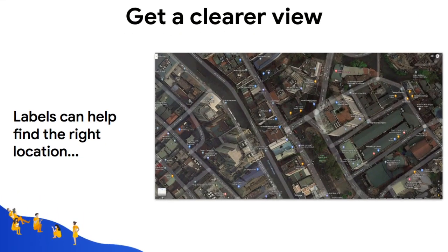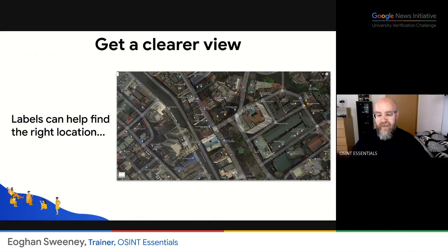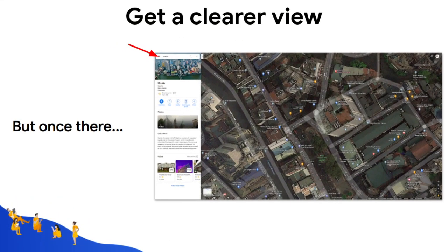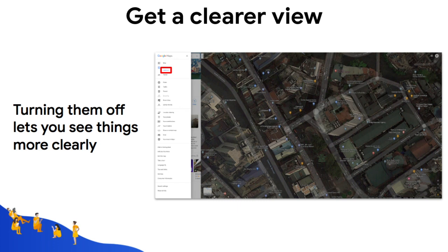Sometimes on aerial views, you can get a much clearer view by removing the labels. The labels can be helpful for bringing you into the right area in the first place because they tell you what things are. But once you get into that area, you can use the dropdown on the left to turn off the labels, and once you do that you have a much clearer view of the details.